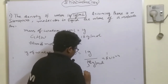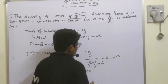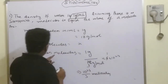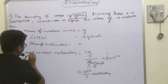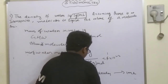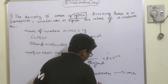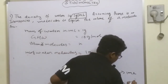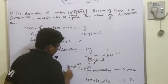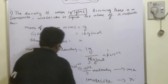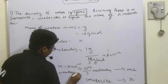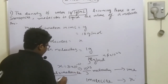We get 6.023 into 10 to the power of 23 divided by 3 molecules for 1 gram. For 1 milliliter, we also get 10 to the power of 23 by 3 molecules. Then, for 1 molecule X equals 10 to the power of minus 23 times 3. X equals 1 mL times 1 molecule divided by 10 to the power of 23 by 3.